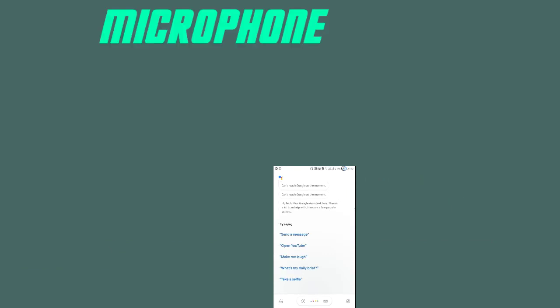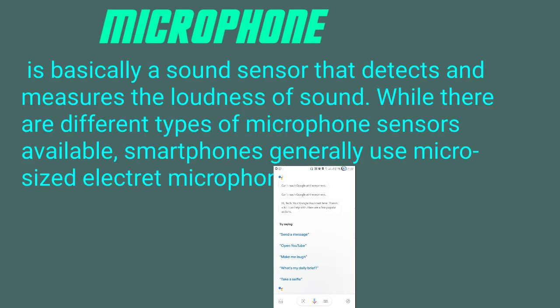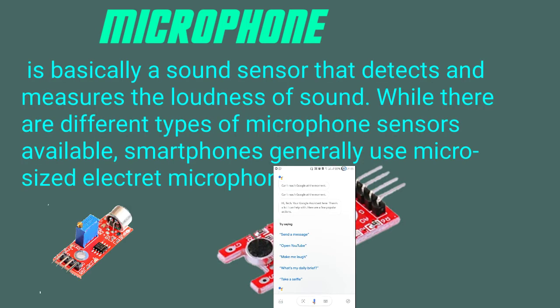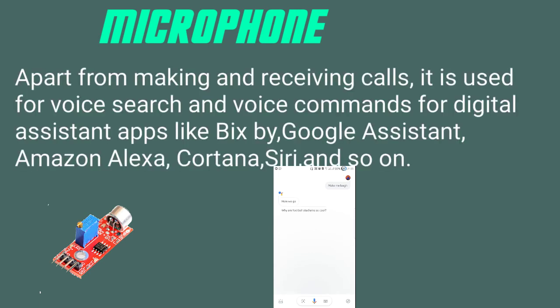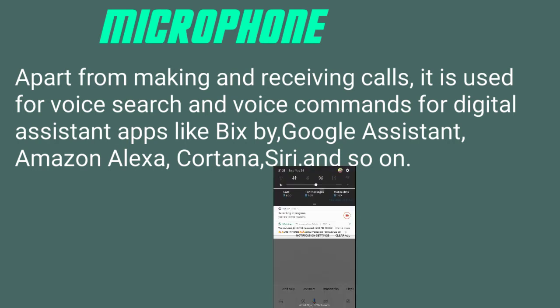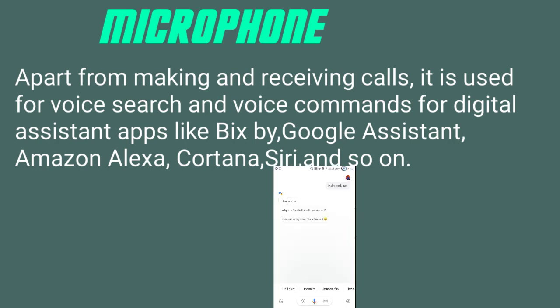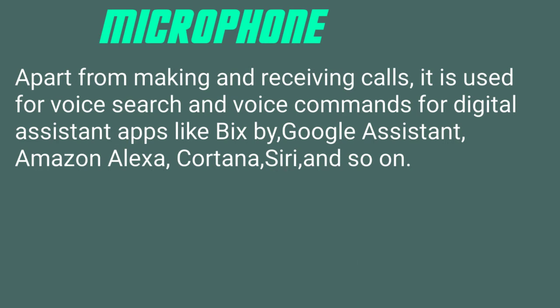Microphone — the microphone is basically a sound sensor that detects and measures the loudness of sound. While there are different types of microphone sensors available, smartphones generally use micro-sized electric microphones. Apart from making and receiving calls, it is used for voice search and voice commands for digital assistant apps like Bixby, Google Assistant, Amazon Alexa, Cortana, Siri, and so on.